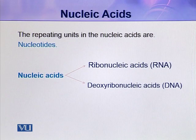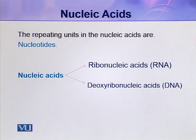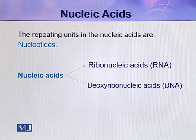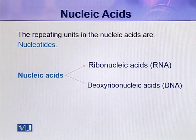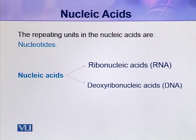Similarly, the nucleotide sequence of an mRNA is dictated by the nucleotide sequence of DNA. So a segment of DNA which is responsible for the synthesis or production of a functional product — either mRNA or a protein — is called a gene. There are thousands of genes in an organism, so the DNA molecule contains thousands of genes, making it a very long molecule.